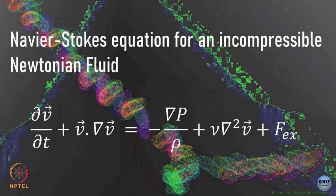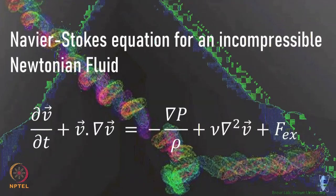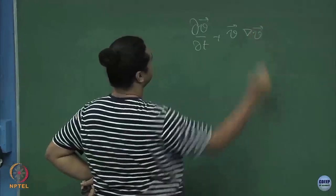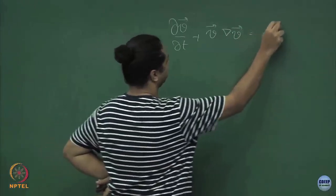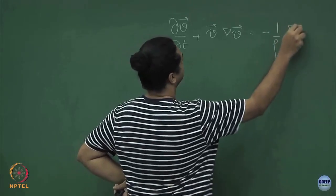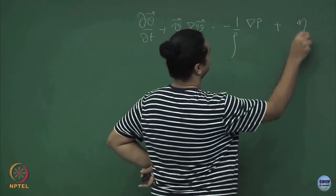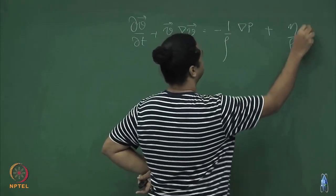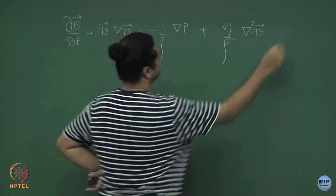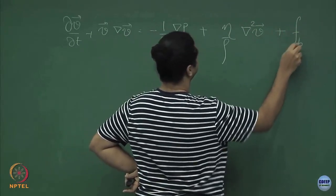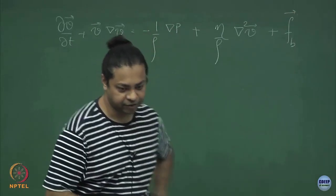What we are doing is the Navier-Stokes equation. We derived the Navier-Stokes equation last class, which was del v del t plus v dot del v equals minus 1 by rho gradient of the pressure plus eta by rho Laplacian of v plus whatever body forces there are, like gravity or whatever.